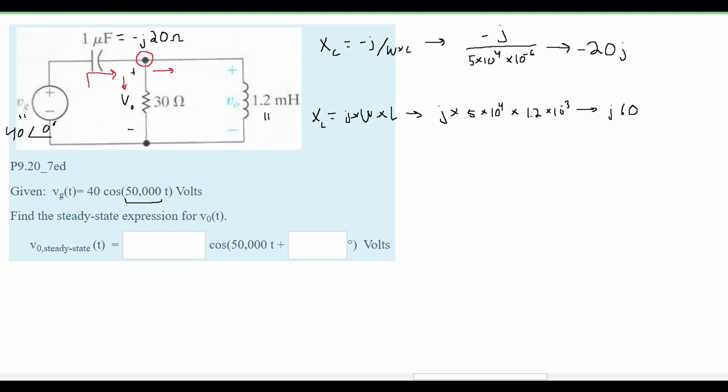So our inductance is j60. Now since these are all the same kind of type we can plug this into our formula. First thing we're going to look at is the current going into our node from the left, and from this we are going to get a V₀ minus our Vg which we know to be 40 with our angle of 0 degrees.